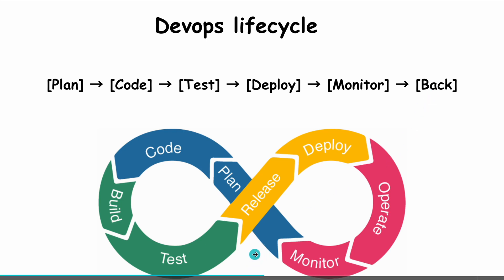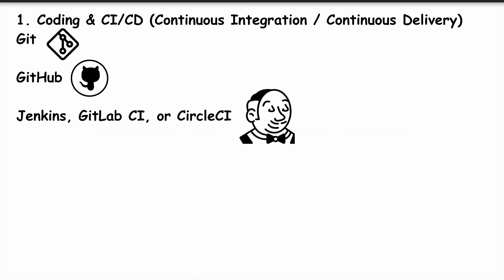This ongoing loop is what allows modern applications to get new features, fixes, and improvements so quickly — sometimes even every day. Let's talk about the tools DevOps uses. Each one helps automate and improve a part of the DevOps lifecycle. Git is a version control system used to track changes in code — it helps developers collaborate and maintain a history of every change. GitLab is a platform where Git repositories are hosted; it allows teams to store code, manage it, and run CI/CD pipelines. Jenkins is a tool that automatically builds, tests, and deploys code whenever changes are made.